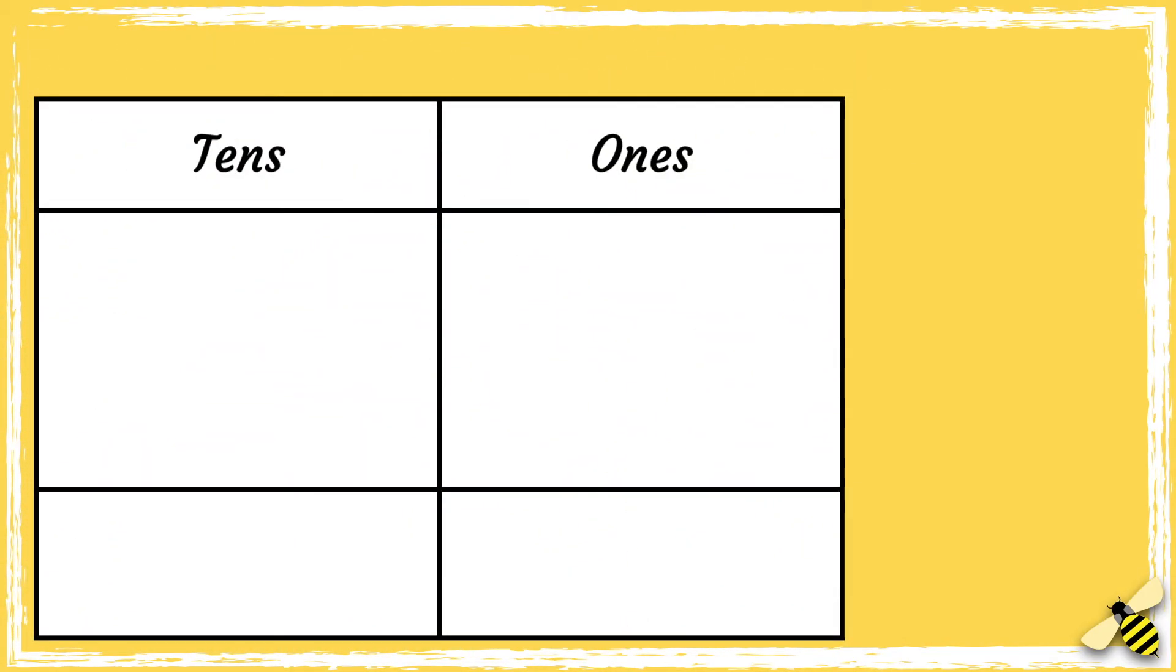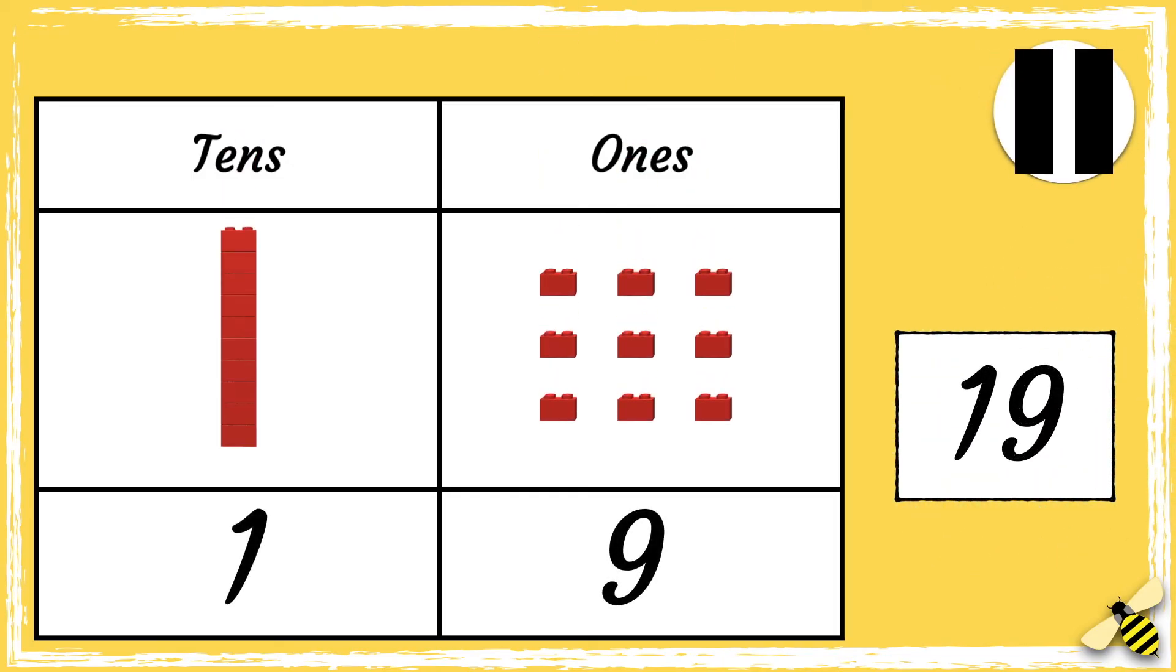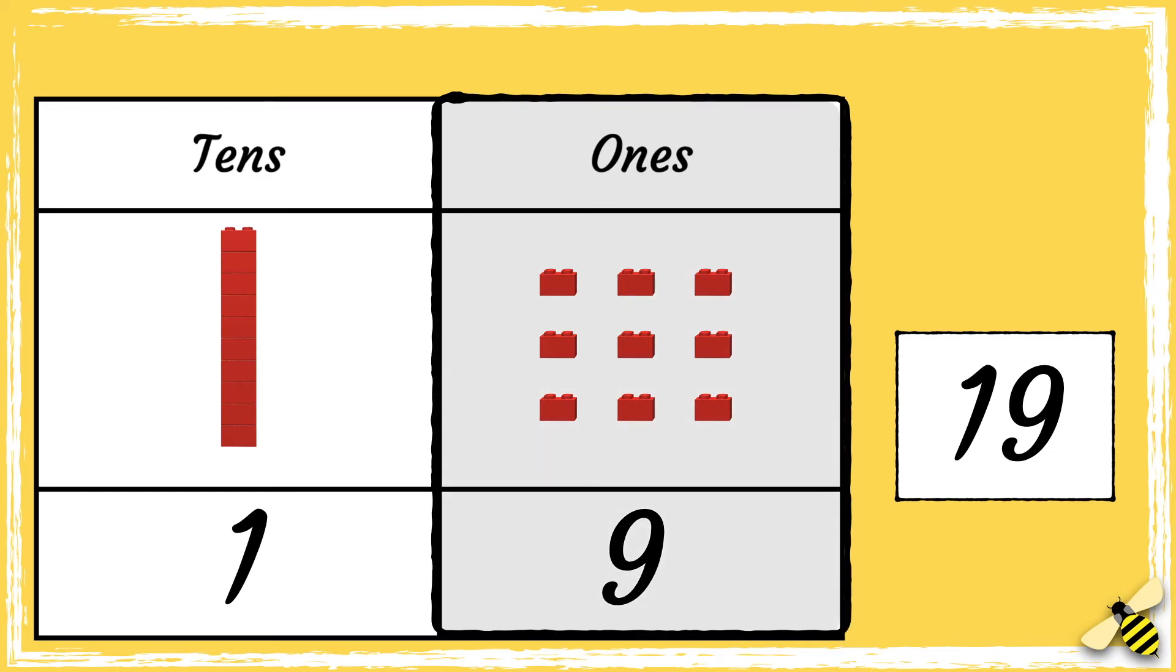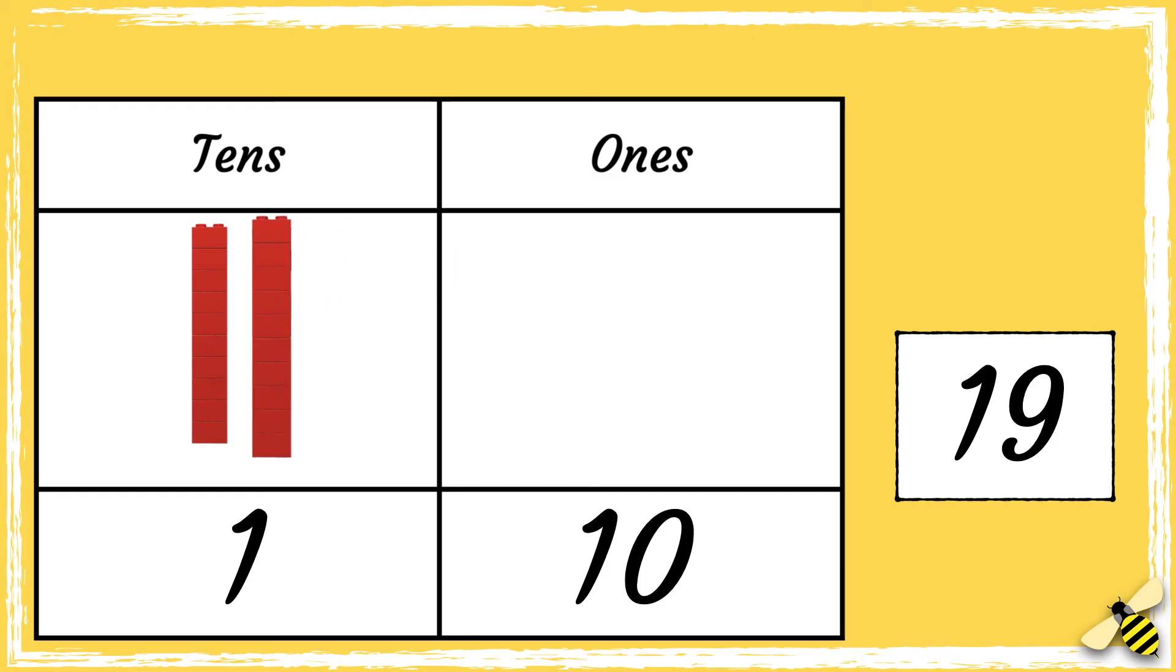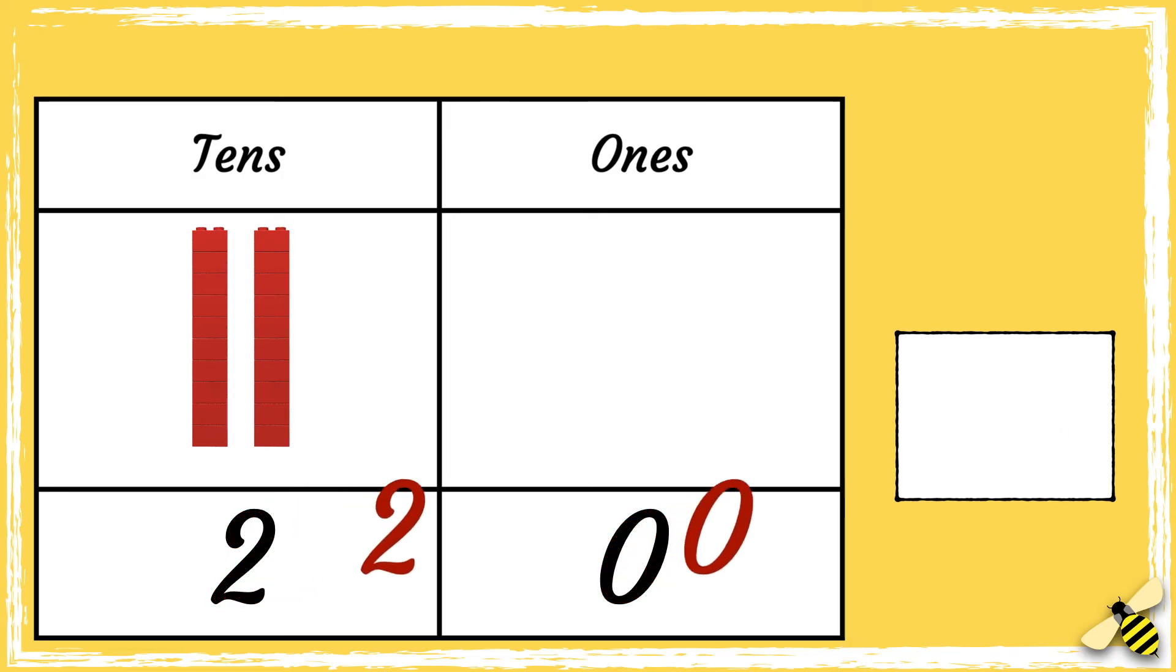What is one more than 19? Pause the video to give you time to work out the answer. Press play when you're done. So when we add one more, we need to add one more to the ones column. We now have ten ones in the ones column. We can move the ten ones into the tens column now to make another ten. So now we have two tens, and we have zero ones. So one more than 19 is 20.